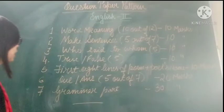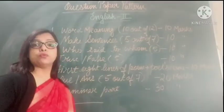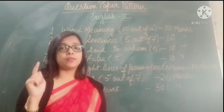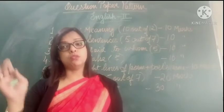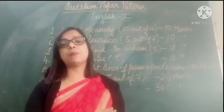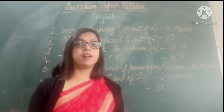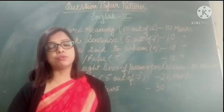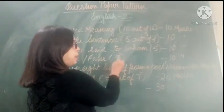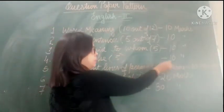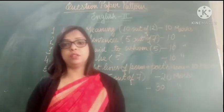Next is true/false. For true/false, children, you have to read the chapter properly, because true/false questions will not be given to you in advance — they can come from anywhere in the chapter. So read all the chapters carefully. 5 true/false questions will come, and that will be of 10 marks.